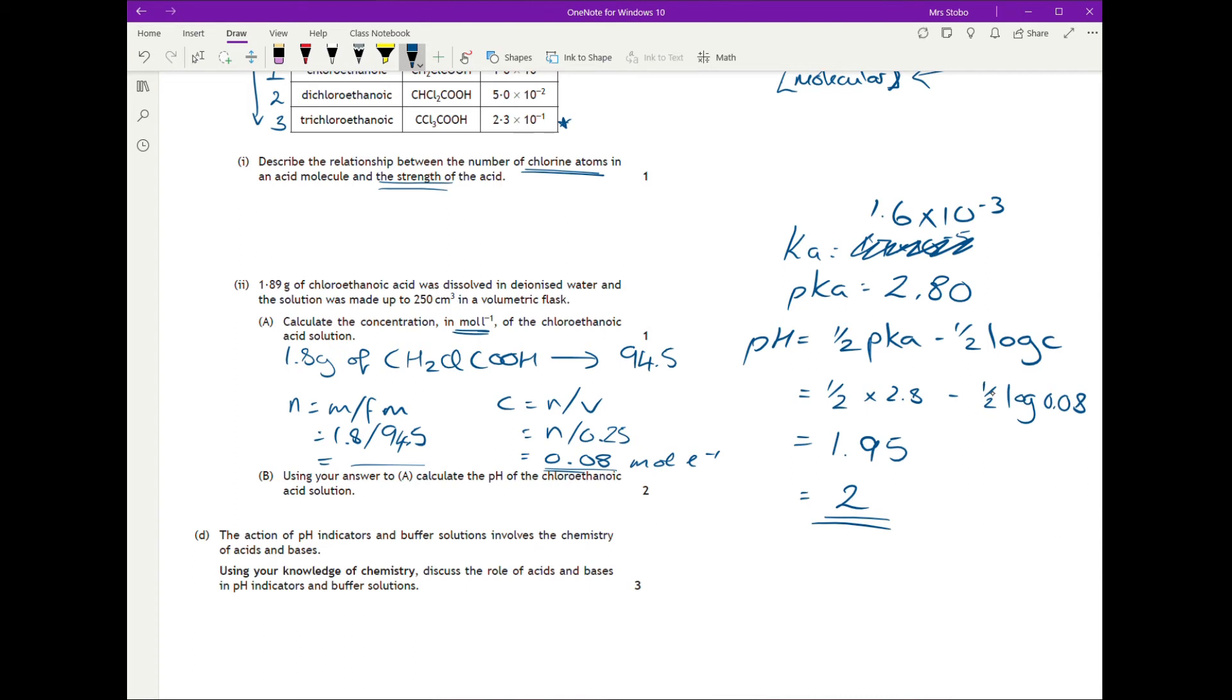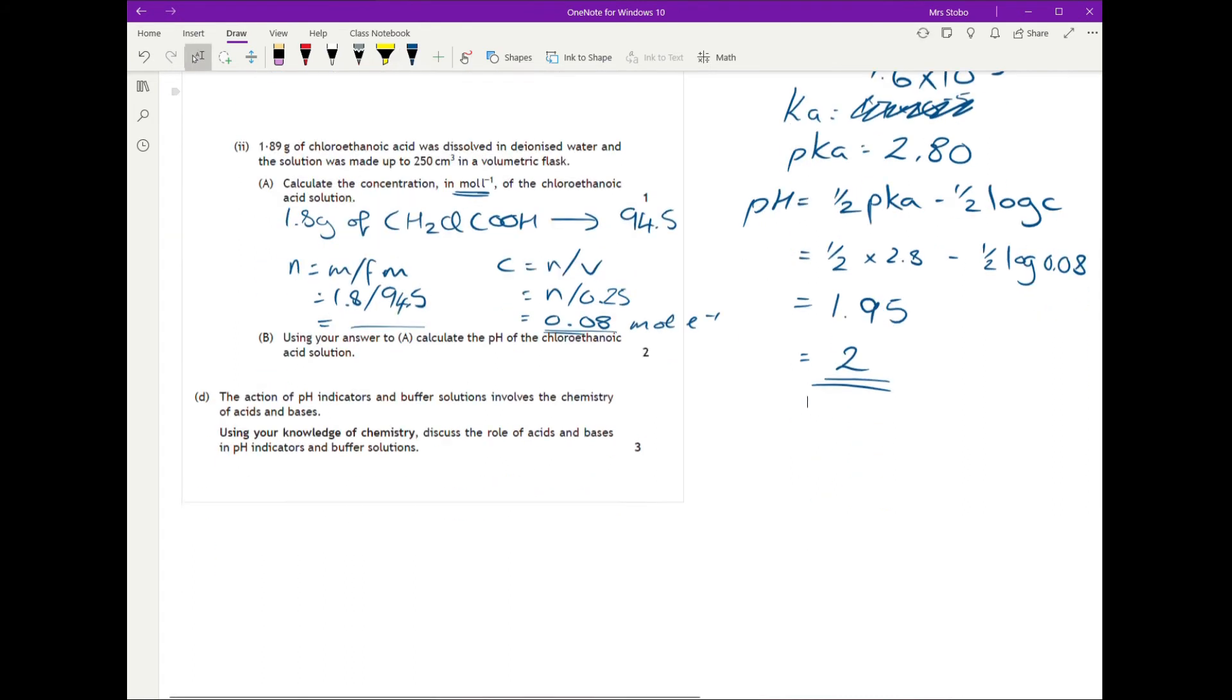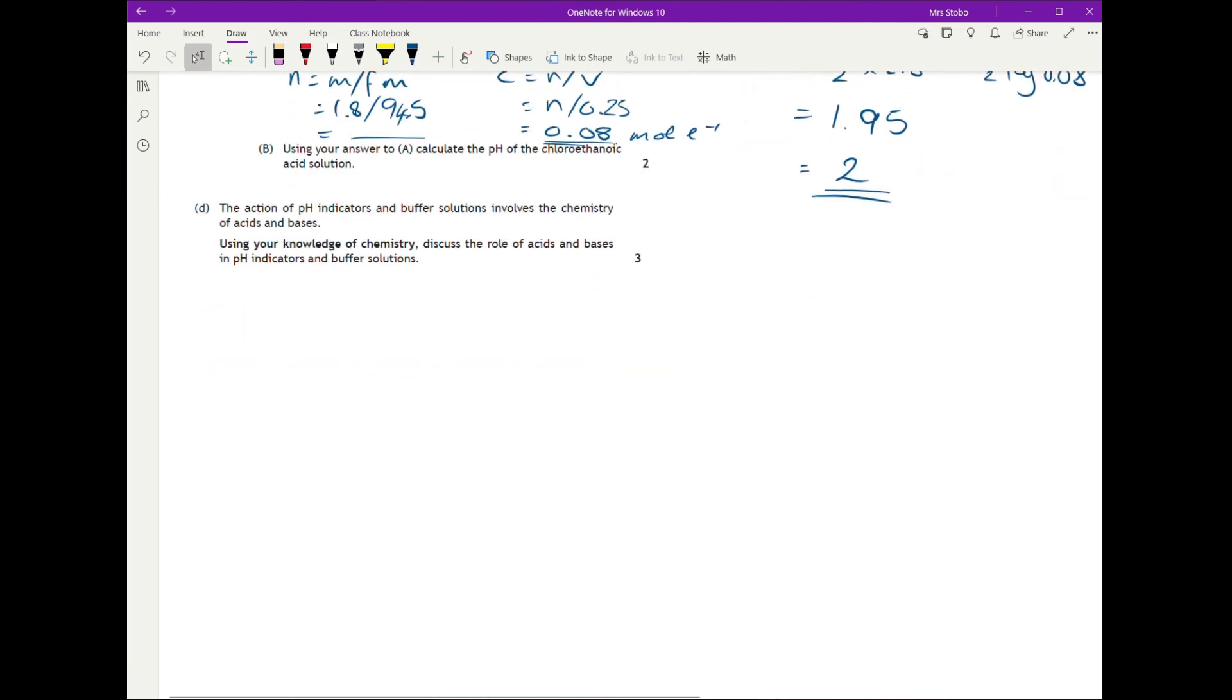Yeah, quite a bit of work. There are other ways you could run it around, but I think that's the easiest, the most straightforward. Right, we hit one of these horrible three marker questions. Discuss the role of acids and bases in pH indicators and buffer solutions. It is a knowledge of chemistry one. So it's basically a case of making sure you put down everything you know about anything to do with indicators and buffers, and you explain what's going on.